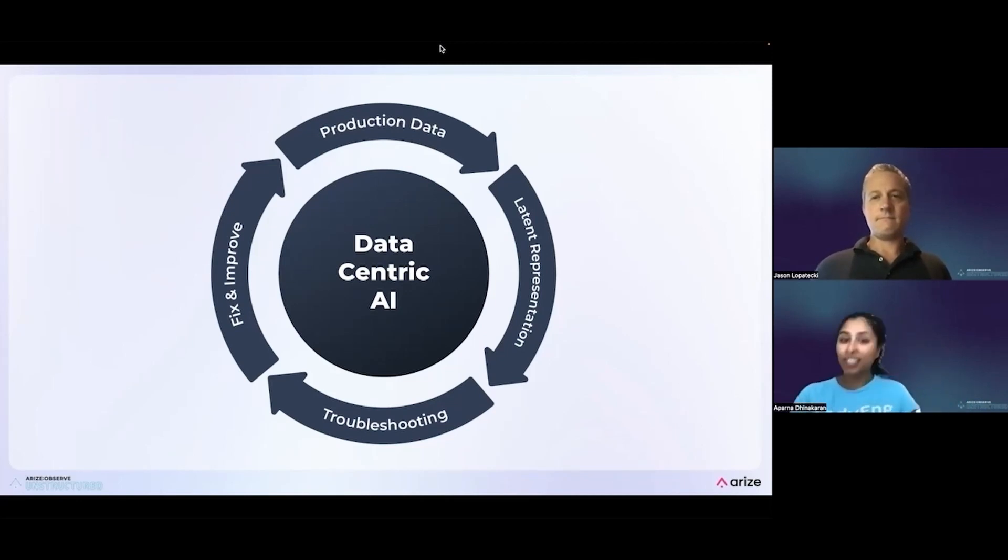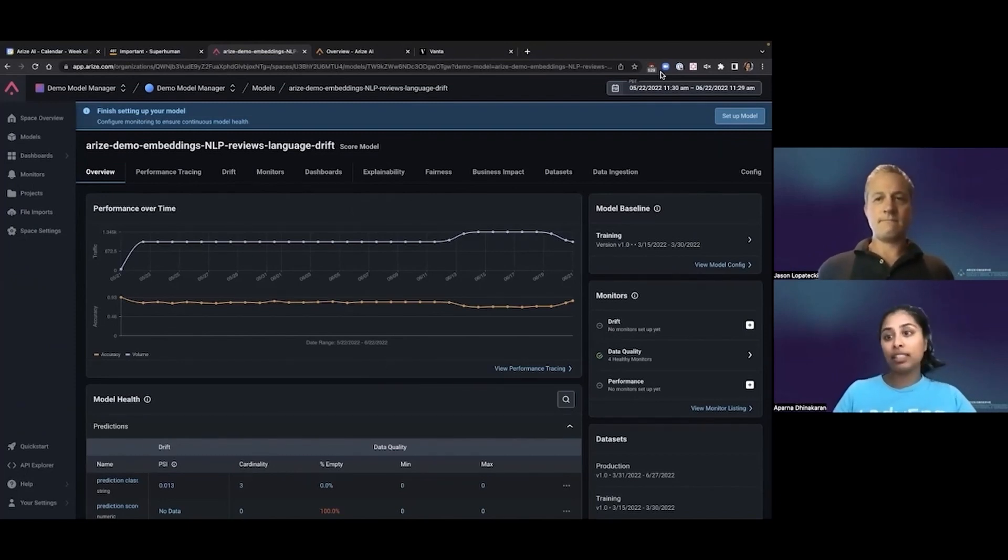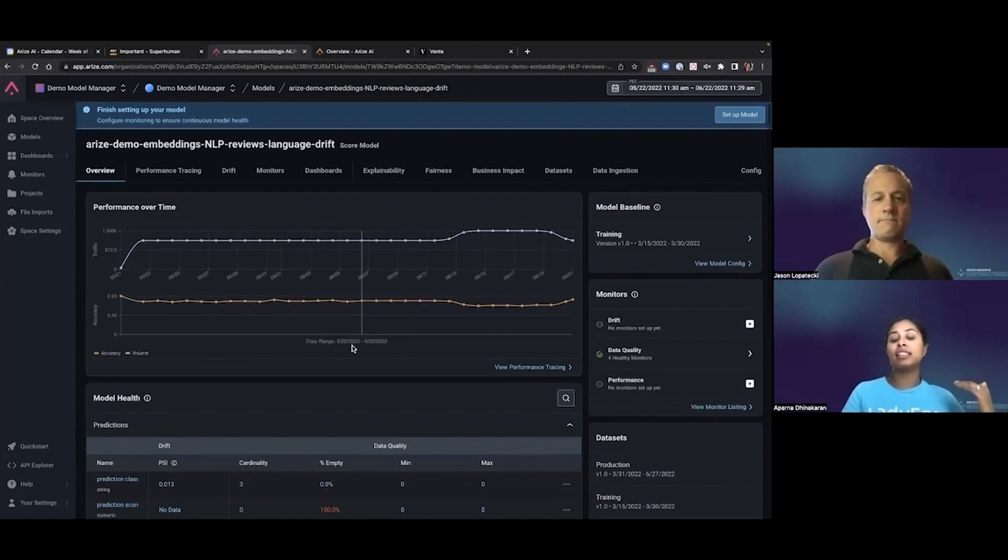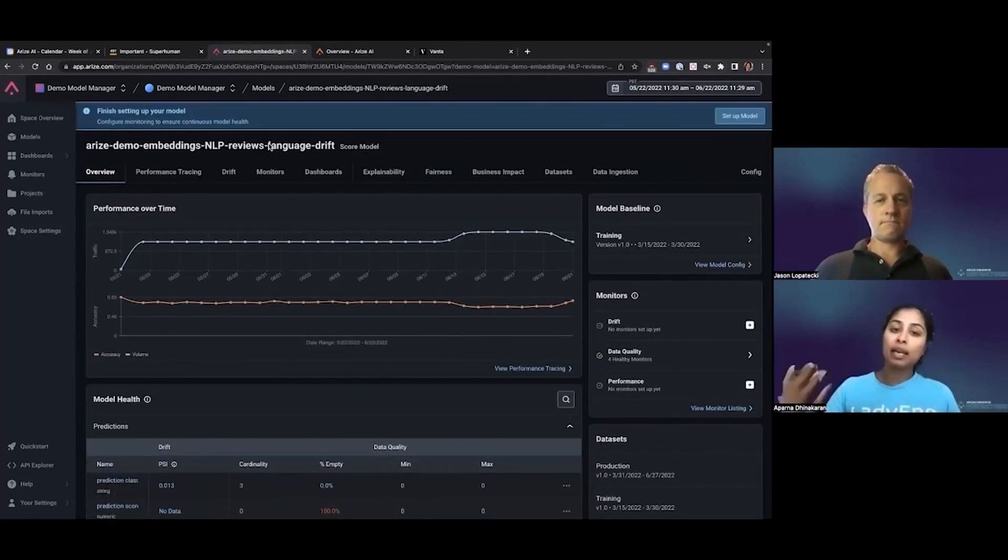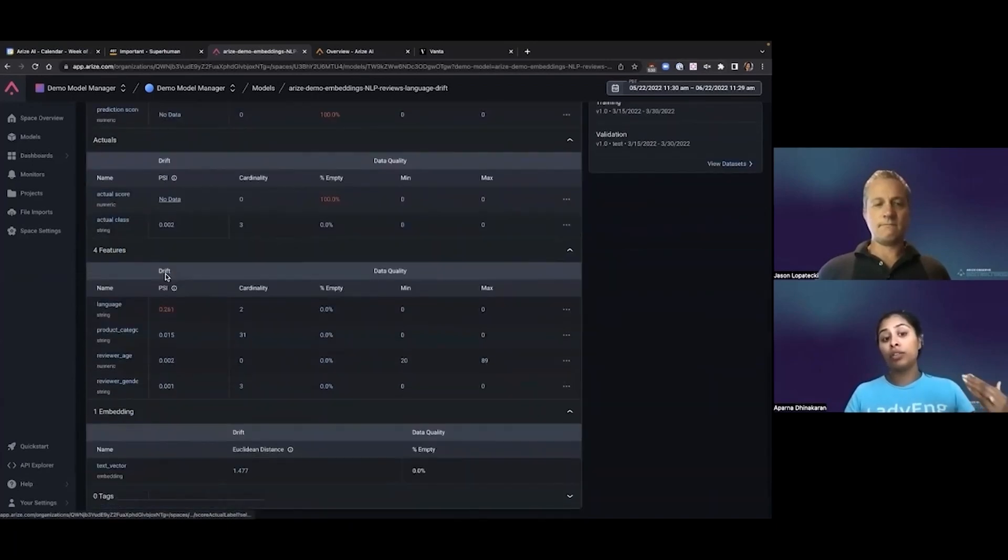And I'll show you how all this works with a quick demo of the product itself. And so what I'm showing you here is actually the Arise product itself. What you can see in the Arise product is, so this is an example, same example we've been going through, which is kind of a model which is collecting reviews. These reviews can be, every e-commerce company probably has an NLP model that's looking at the reviews that customers are providing underneath products. And what we're looking at here is the model schema, not only has structured data, but also has unstructured data, which now users can provide through embeddings.